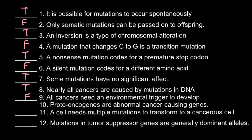Proto-oncogenes are abnormal cancer-causing genes — and this is false. Proto-oncogenes are normal genes; they are not abnormal. But when they are mutated, they would cause cancer. Proto-oncogenes normally regulate cell division and programmed cell death. When mutations change their regulatory functions, they may cause development of cancer.